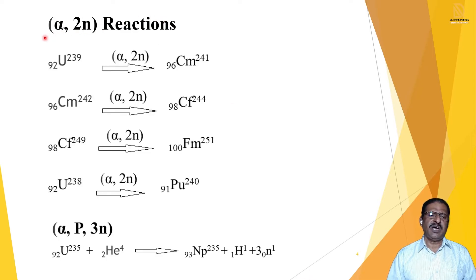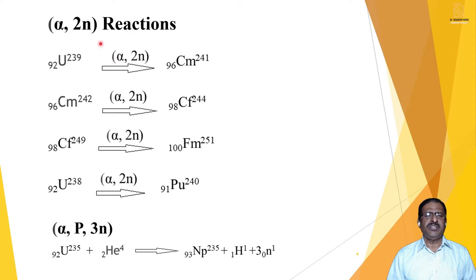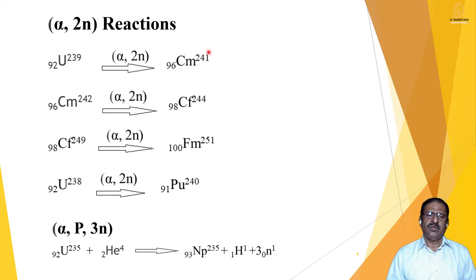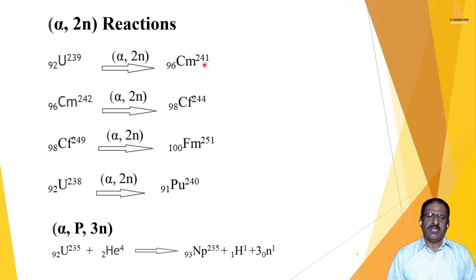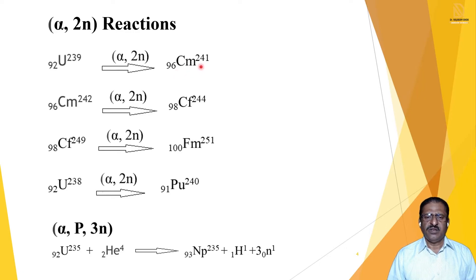Now we see the second type: alpha-2N reaction. One alpha particle is bombarded and two neutrons are eliminated. Atomic number increases by 2, and mass increases by 2 (alpha adds 4, two neutrons remove 2). Example: Uranium-92-239 undergoes alpha-2N reaction, giving Curium-96-241.